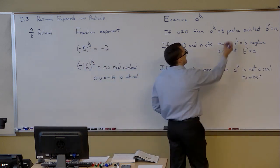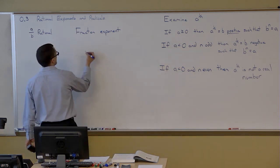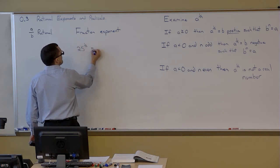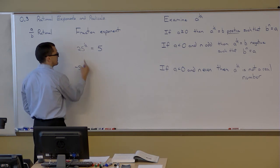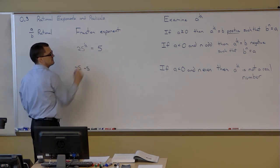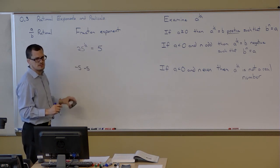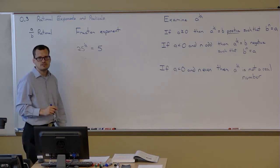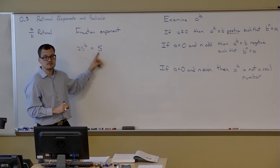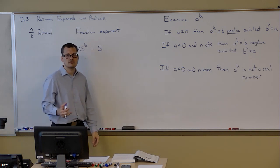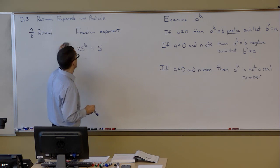I did use the positive version because, for instance, 25 to the one-half — you might say five times five is 25, but also negative five times negative five gives 25. When you have a positive base, we always use the positive value. We always assume it's the positive square root, or the positive fourth root, or positive sixth root. That's what fractional exponents do.